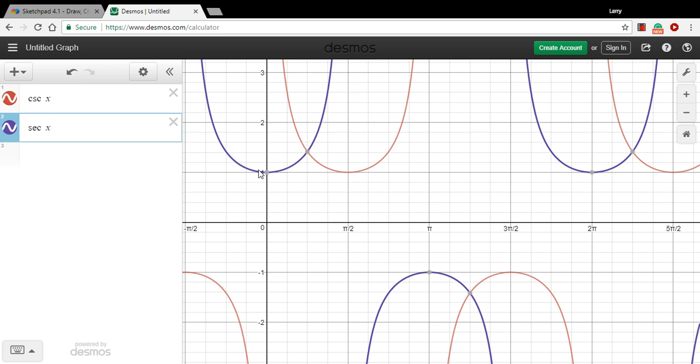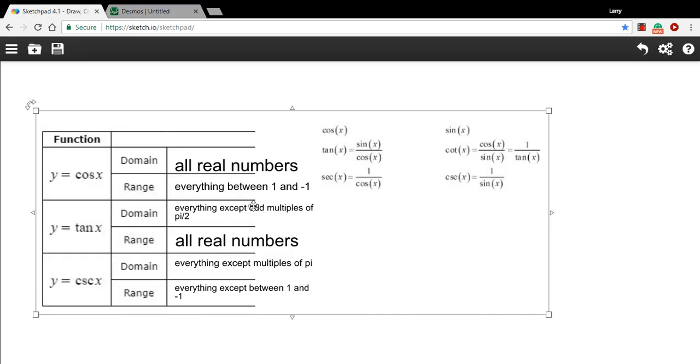So in this case, the range is going to be the same. The domain is going to be everything except those odd multiples of pi over 2 again. So that is a little bit of work with the domain and the range of trigonometric functions.